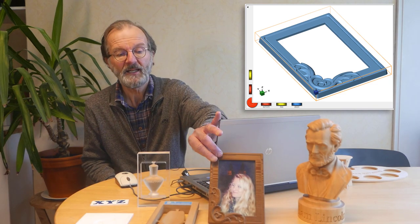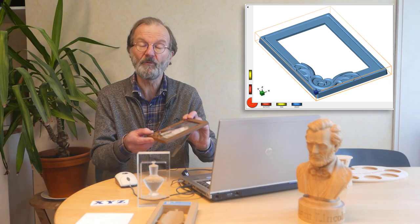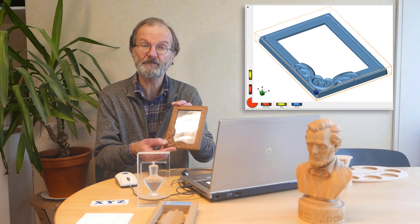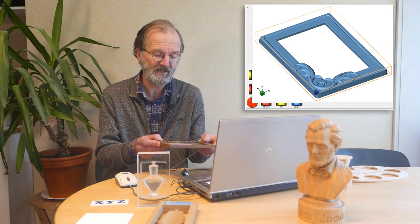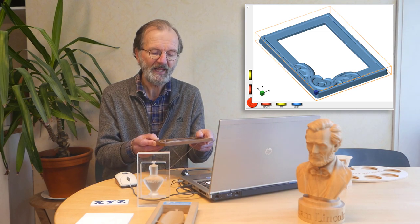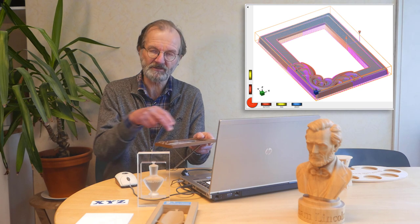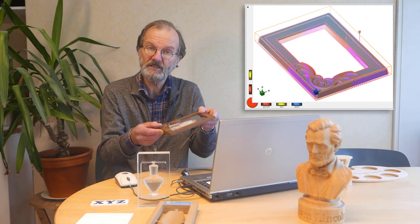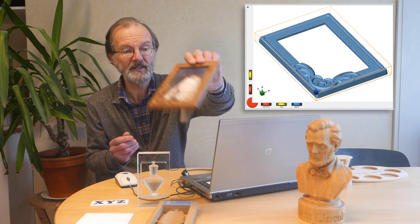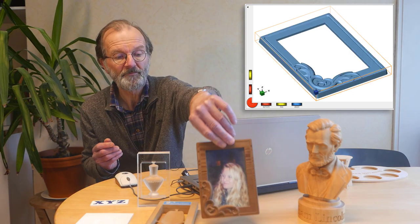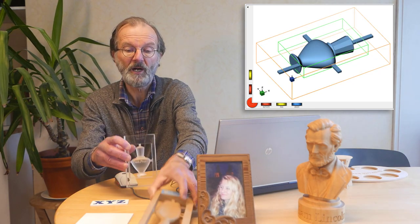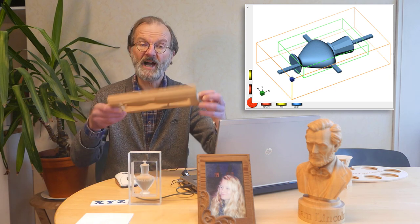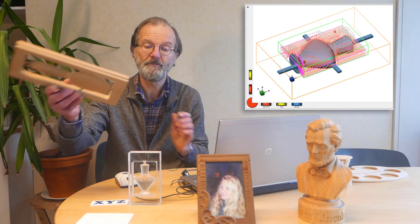For geometry data, DeskProto imports an STL file. One of the DeskProto samples is a photo frame, and DeskProto will project a raster of toolpaths over the 3D geometry to create this model. These examples are machined from two sides to get a complete 3D model.